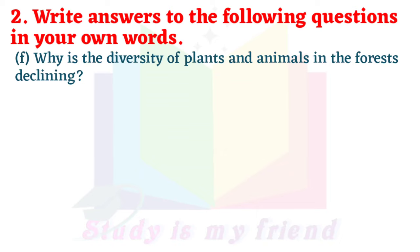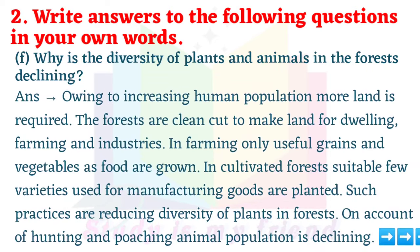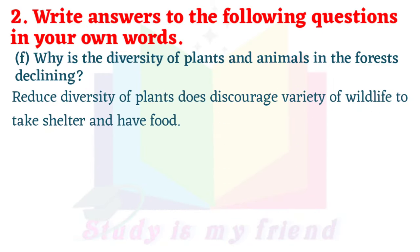Why is the diversity of plants and animals in the forest declining? Owing to increasing human population, more land is required. The forests are cleared to make land for dwellings, farming and industries. In farming, only useful grains and vegetables as food are grown. In cultivated forests, only a few suitable varieties used for manufacturing goods are planted. Such practices are reducing the diversity of plants in forests. On account of hunting and poaching, animal population is declining. Reduced diversity of plants discourages variety of wildlife to take shelter and find food.